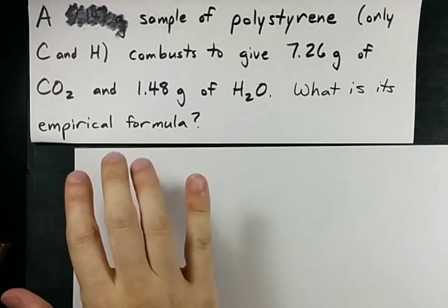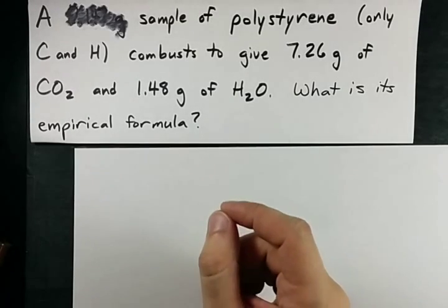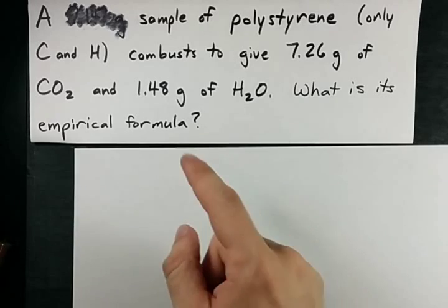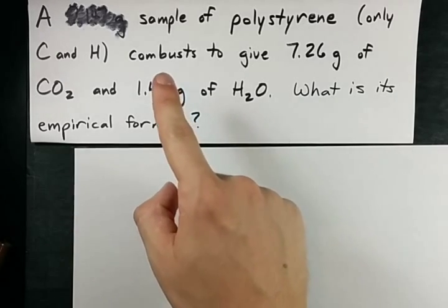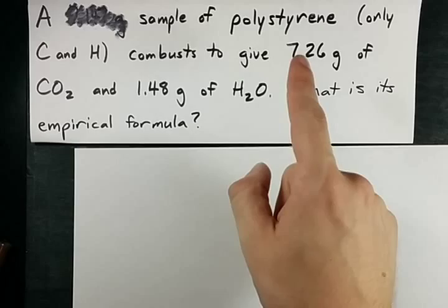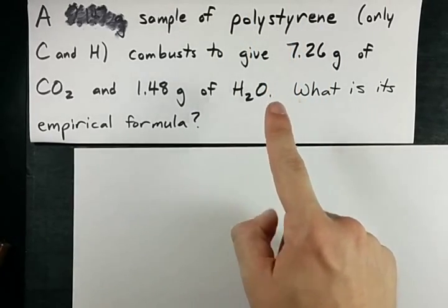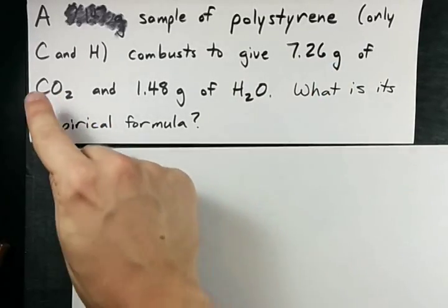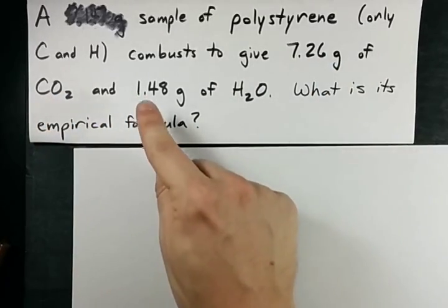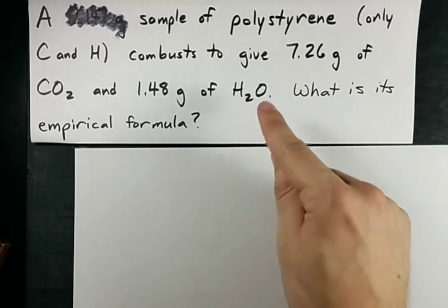Let's figure out the empirical formula of an organic compound based on combustion analysis. That is taking a sample of some organic compound, polystyrene here, and burning it gives 7.26 grams of carbon dioxide and 1.48 grams of H2O.